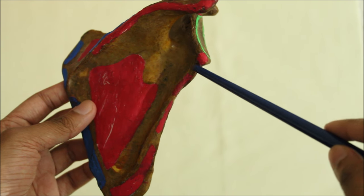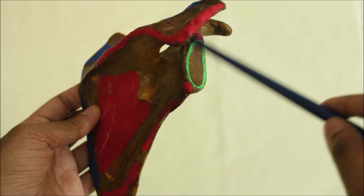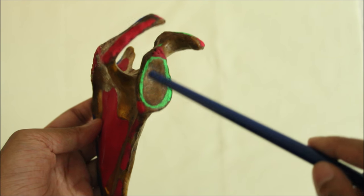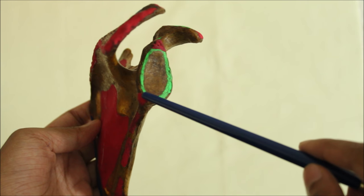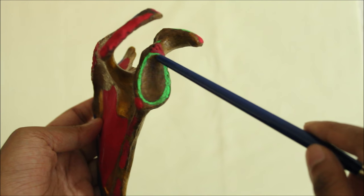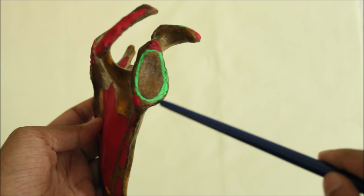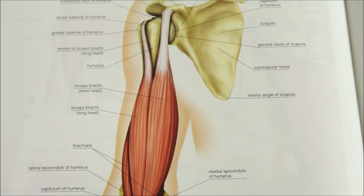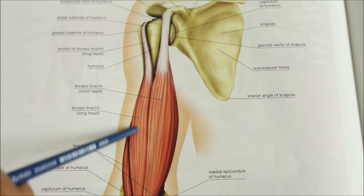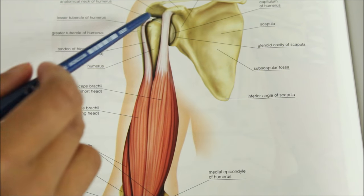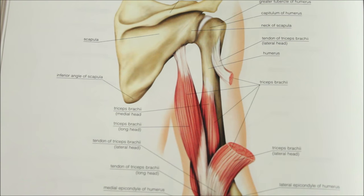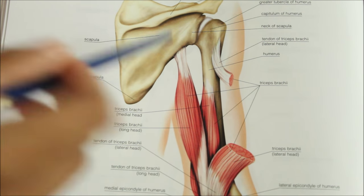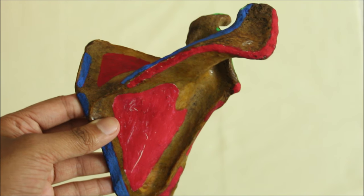The lateral angle gives attachment to the capsule of the shoulder joint. The supraglenoid tubercle gives origin to the long head of the biceps, and the infraglenoid tubercle gives origin to the long head of the triceps. The glenoid cavity is visible here, along with the glenoid labrum marked in green, which will be discussed later. The long head of the biceps brachii originates from the supraglenoid tubercle, and the triceps brachii originates from the infraglenoid tubercle of the scapula.